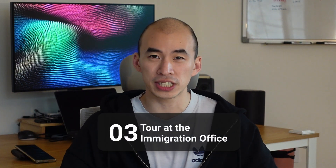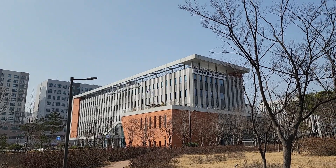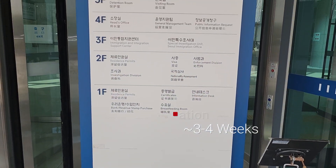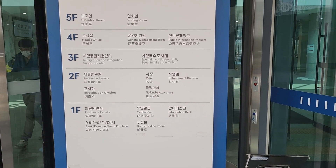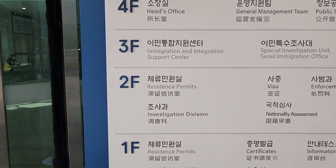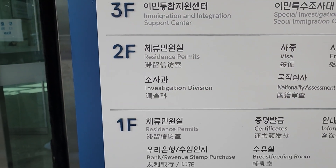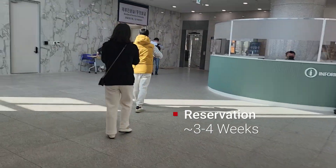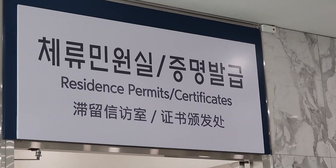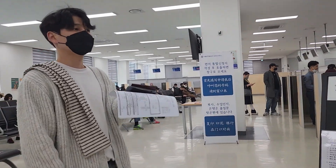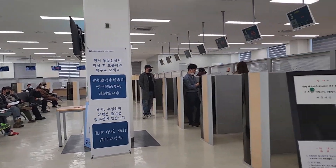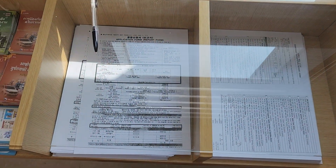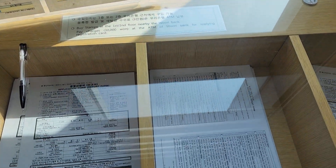Now I'm going to take you to the immigration office and show you what you need to do on the day you apply for the resident card. We are at the Seoul Southern Immigration Office. Check the first and second floor — check which floor you have made the reservation for. This is the waiting area. When your number is called, go to the right counter. You can also fill out the application form at the immigration office, but I would recommend doing it beforehand to save time.